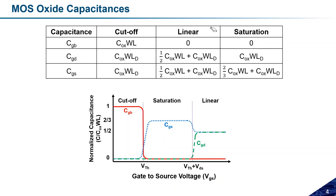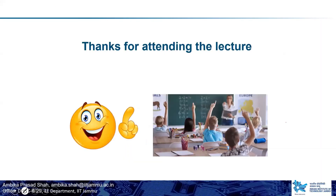This completes the discussion on oxide capacitances associated with the MOSFET. There is another set of capacitances — the junction capacitances (Cdb and Csb) — but since those have already been covered in basic and analog electronics, we won't go through them again here. These oxide capacitances play a major role in delay and power dissipation, which we will begin discussing in tomorrow's lecture.